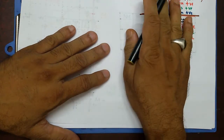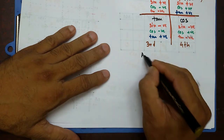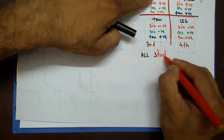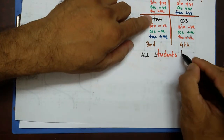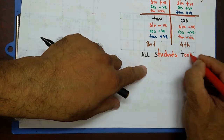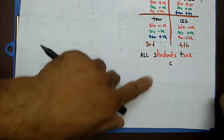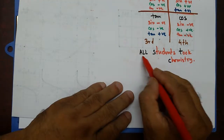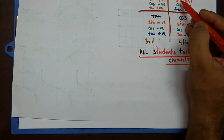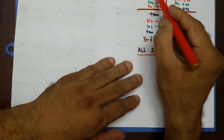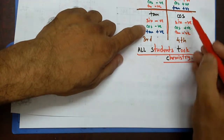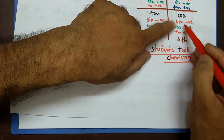I need a mnemonic to memorize this. Going anticlockwise: first quadrant — All (all trig ratios positive); second quadrant — Sine; third quadrant — Tan; fourth quadrant — Cos. The mnemonic is: All Students Took Chemistry. In the first quadrant, all trigonometric ratios are positive. In the second quadrant, sine is positive and cos and tan are negative. In the third quadrant, tan is positive and sine and cos are negative. In the fourth quadrant, cos is positive and sine and tan are negative.